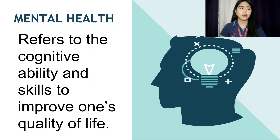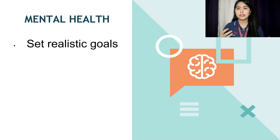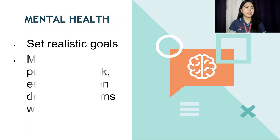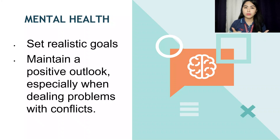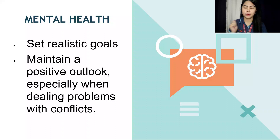Next is Mental health. It refers to the cognitive ability and skills to improve one's quality of life. There are ways to attain mental health. First, set realistic goals — do not set goals that are impossible to achieve because you will only get disappointed. Maintain a positive outlook, especially when dealing with problems and conflicts. Always think positively and do not overthink or worry too much, because problems and conflicts are just temporary. Think about the consequences first before making a decision.